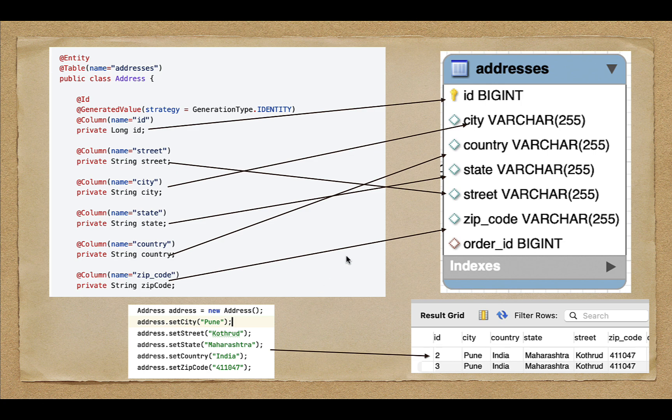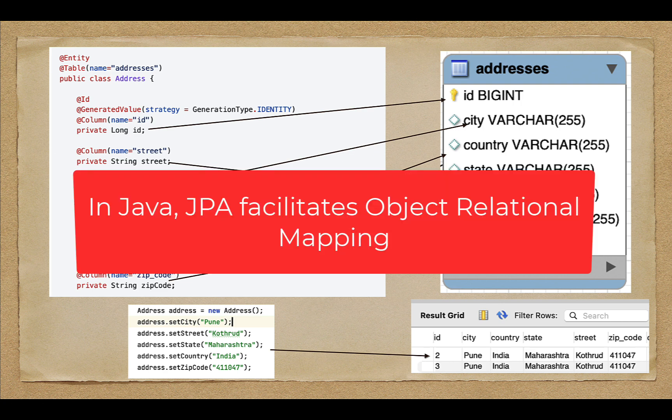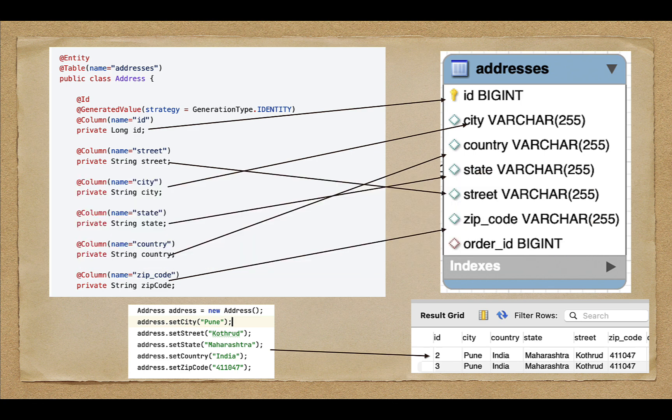So ORM is basically a programming technique that we can use to directly map application domain model objects to relational database tables. Now the question is: in Java, who is responsible for providing object relational mapping? Java provides a standard API called JPA. We can use JPA to provide object relational mapping in Java. We'll see in the next lecture what JPA is.